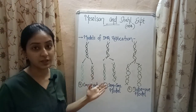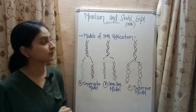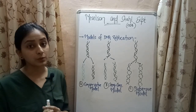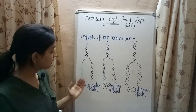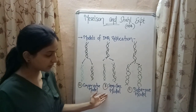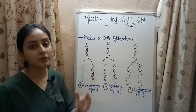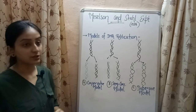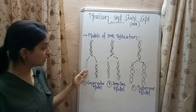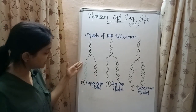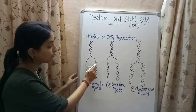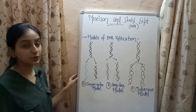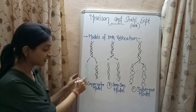Now let's see what is the semi-conservative nature of DNA replication. Three models of DNA replication were proposed by different scientists: the conservative model, semi-conservative model, and dispersive model. According to the conservative model, one out of the two DNA molecules formed consists of both the parental strands while the other DNA molecule consists of both newly synthesized strands.